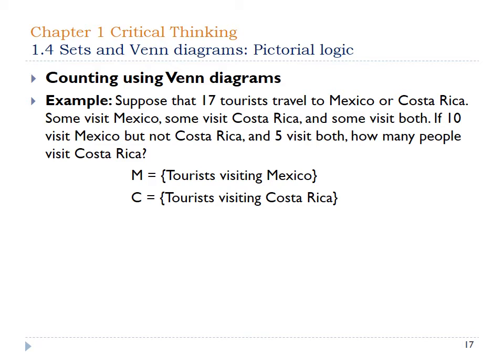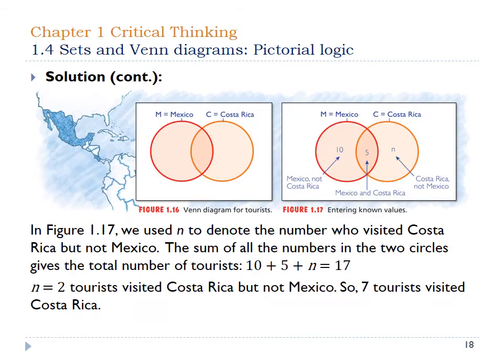Another cool thing we can do with Venn diagrams is use known information to figure out information we haven't been told explicitly. In this example, 17 tourists traveled to Mexico or Costa Rica. They tell us 10 people visited Mexico but not Costa Rica, and 5 visited both. We put that into the diagram — Mexico alone is 10, both is 5. Since the total is 17, and we've accounted for 15, there must be 2 left over — so 2 people went to Costa Rica but not Mexico.